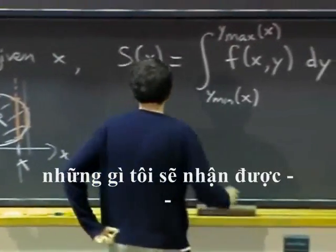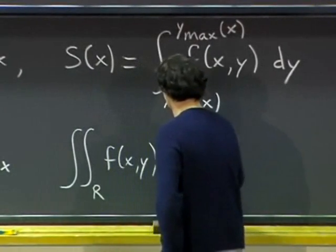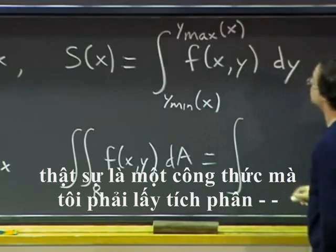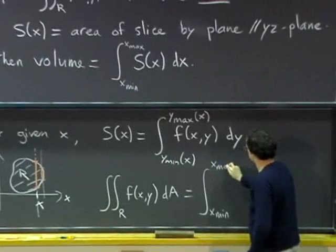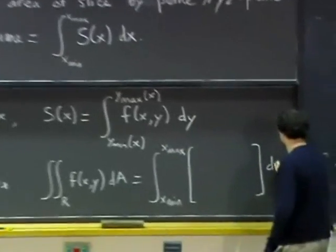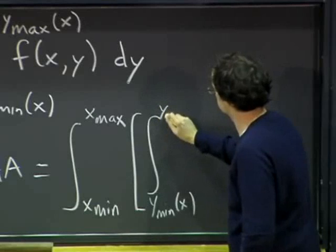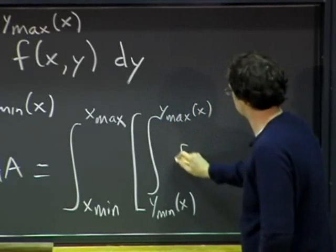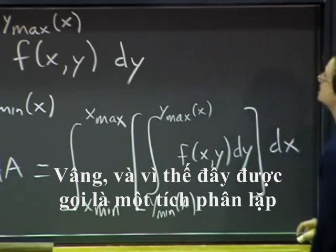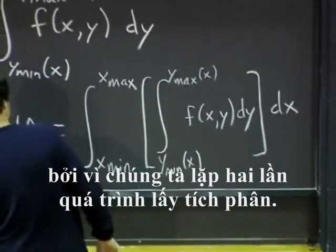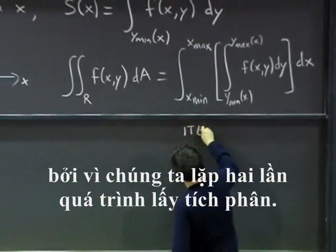So now if I put the two things together, what I will get is actually a formula where I have to take x over x and integral over y. And so this is called an iterated integral because we iterate twice the process of taking an integral.